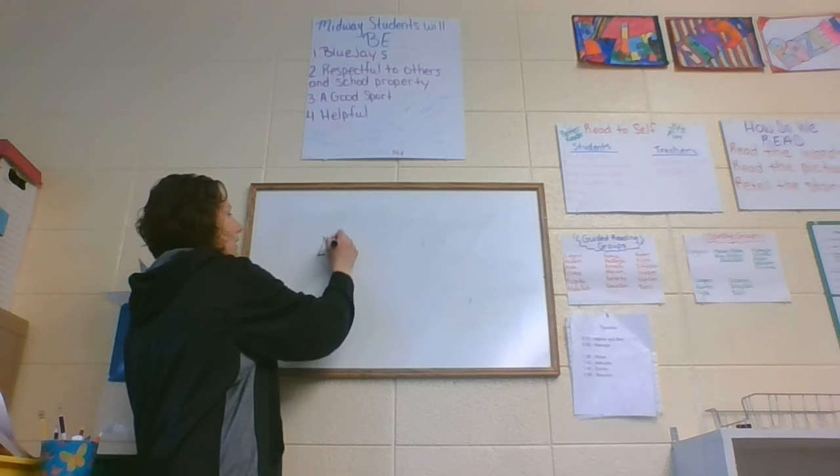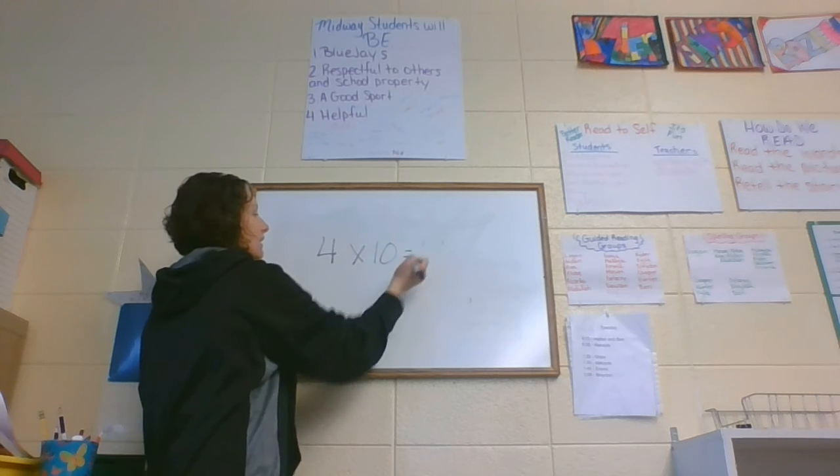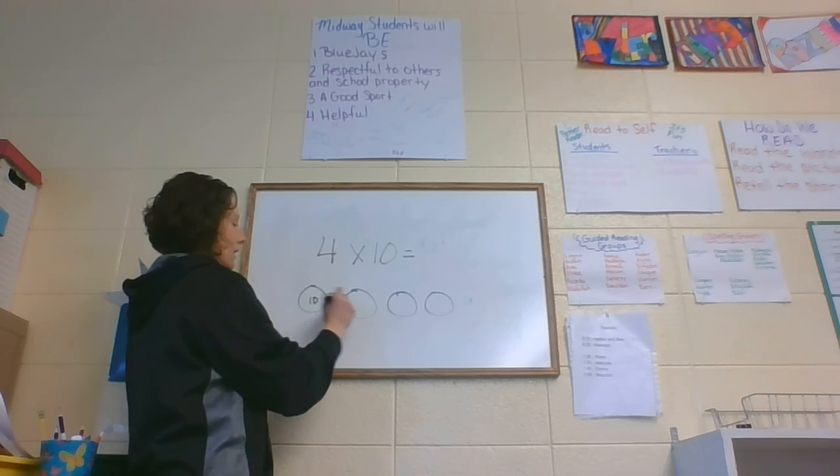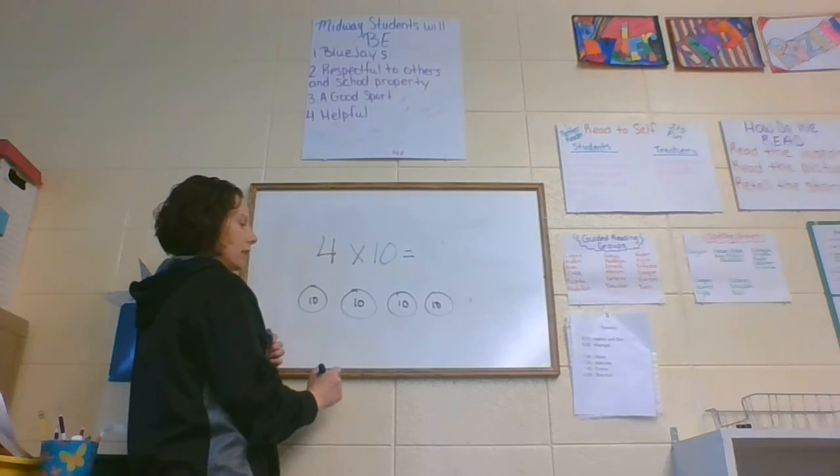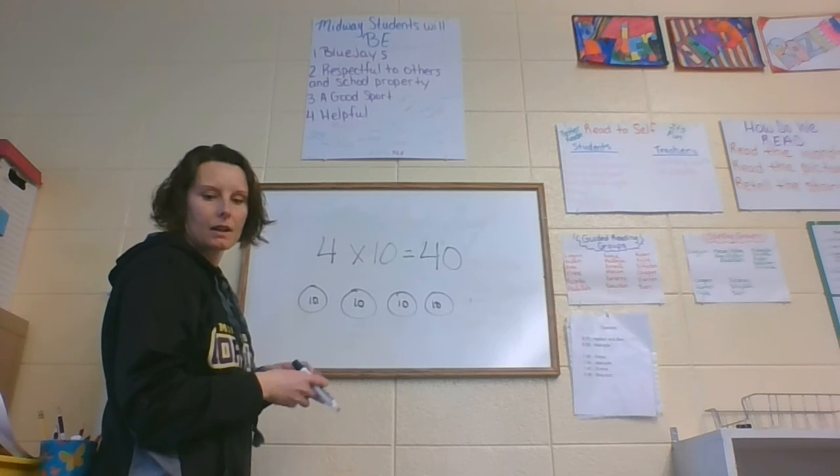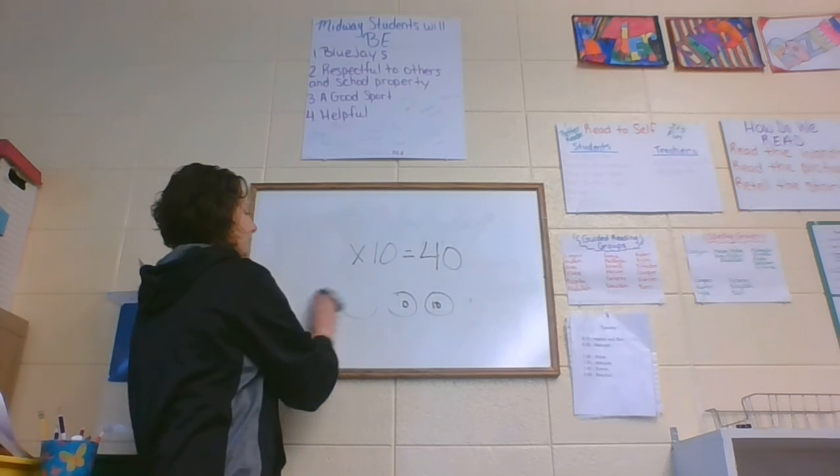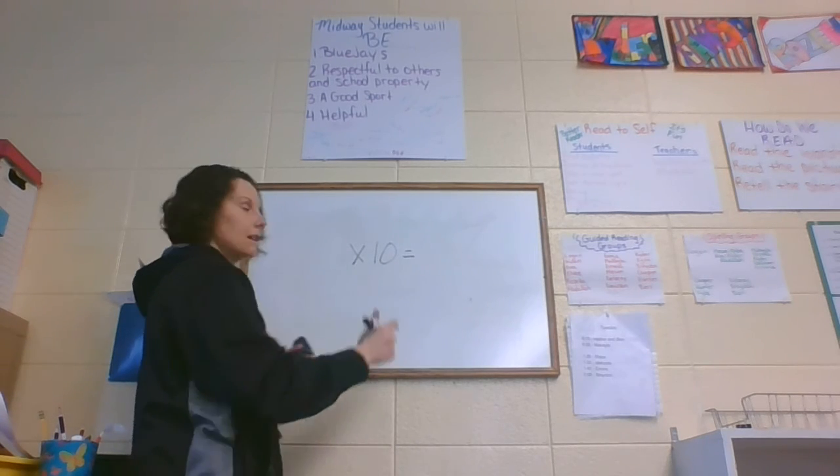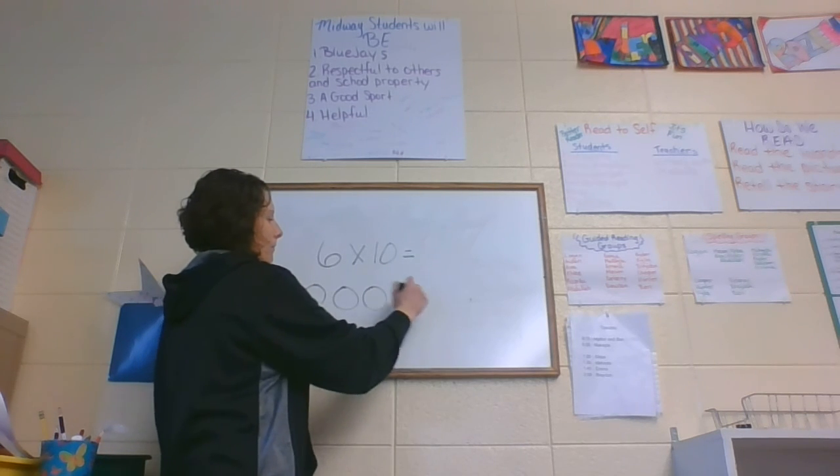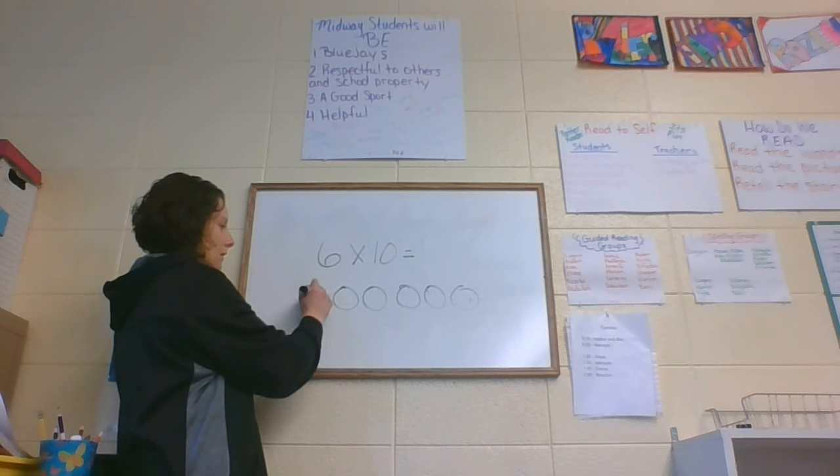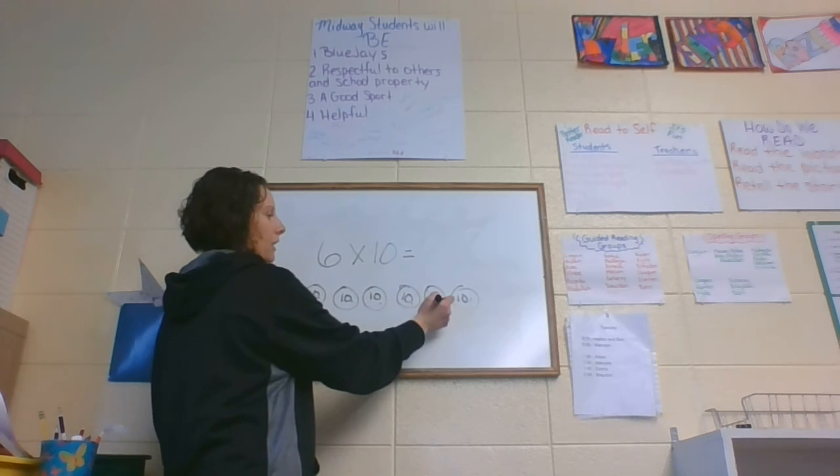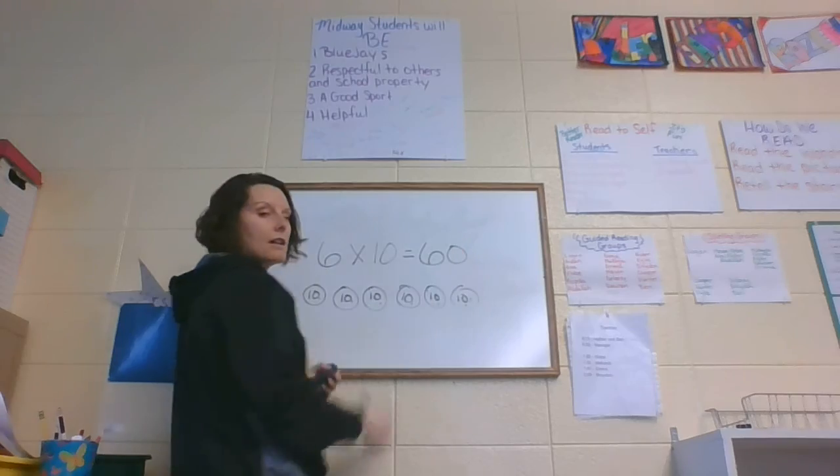Here we go. Multiplication. So we have 4 times 10. Remember that we can do 4 groups. And they each have 10 in there. 10, 20, 30, 40. And the next one is 6 times 10. So I would do the same thing. I can draw 6 circles. Put 10 in each. 10, 20, 30, 40, 50, and 60.